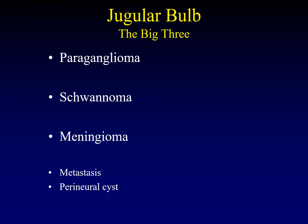We can certainly encounter other things in the jugular bulb much less frequently. Metastases can affect any of the bones, and perineural cysts can occur in the jugular bulb. These are usually not easily confused with the other three, although schwannomas are sometimes entirely cystic.